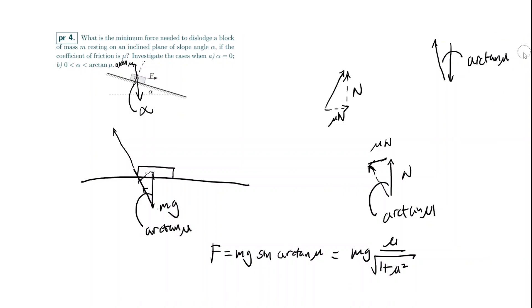By the same geometric argument, the minimum force to dislodge is F = mg · sin(arctan μ − α). That's it for this video — thanks for watching!